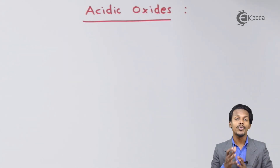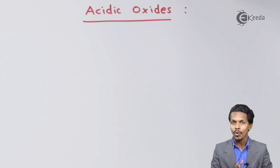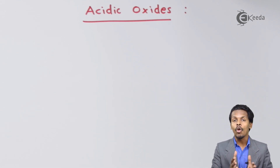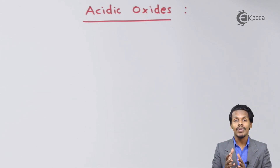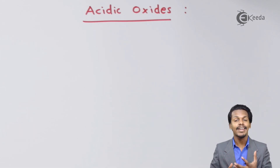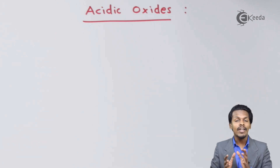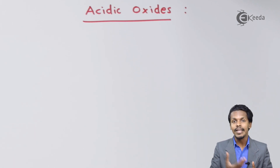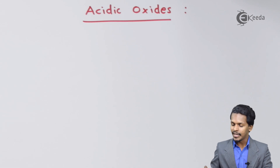The first classification is acid oxides. Whenever oxygen is combined with a non-metal, the product that is formed is known as an acid oxide. The reason is that the oxide is acidic in nature. Let us look at some examples to elaborate this topic clearly.